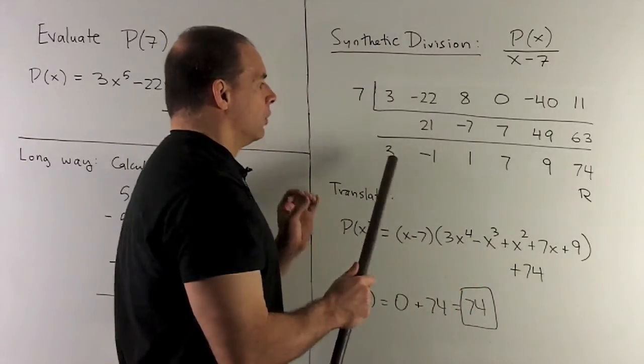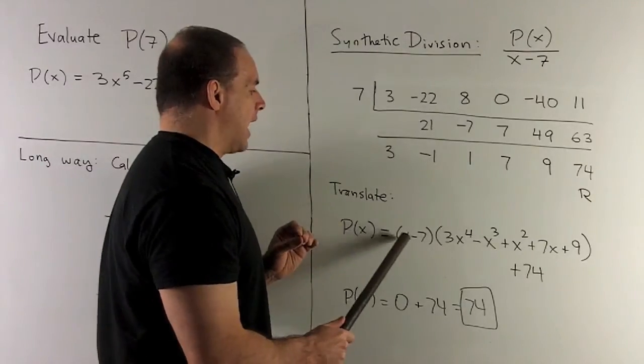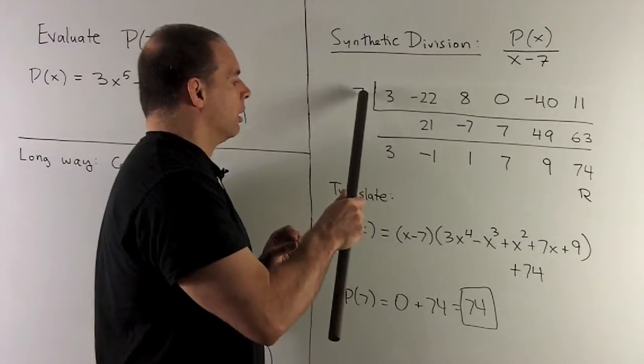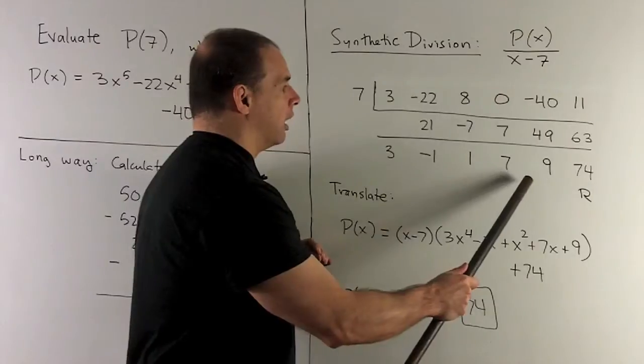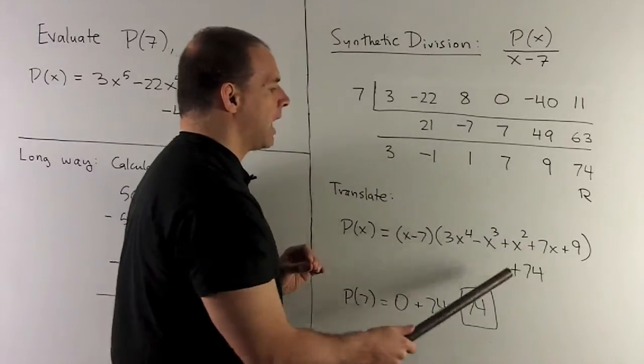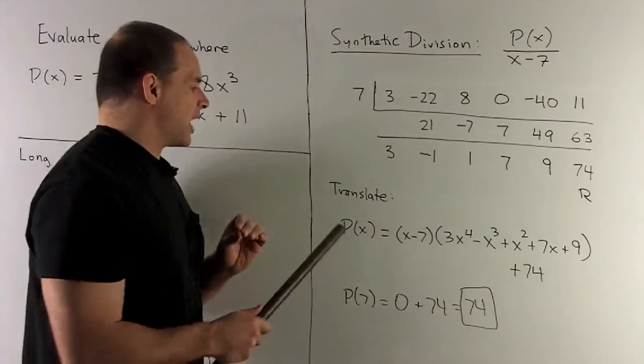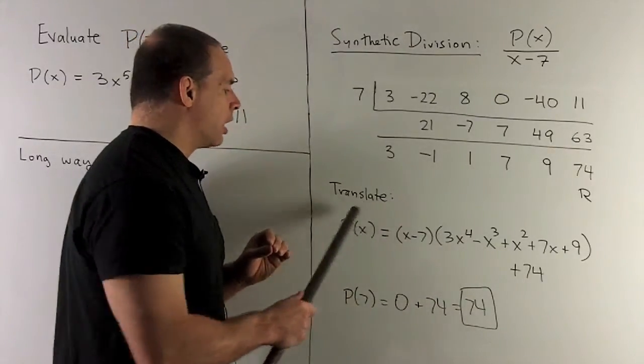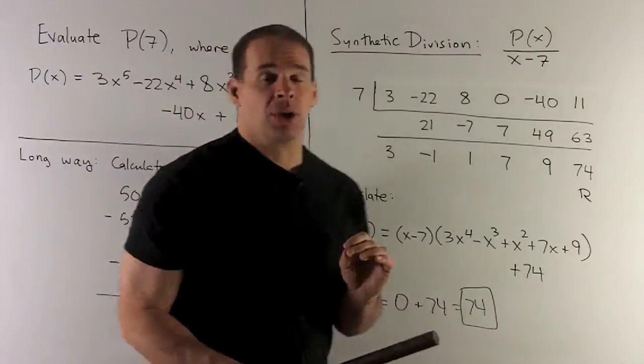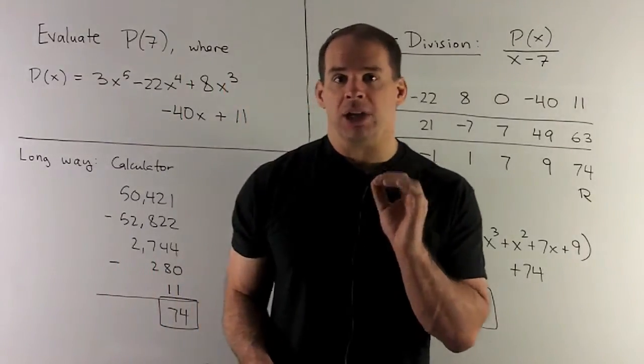Okay, the way we translate, P of X equals X minus your number times the polynomial here plus your remainder 74. So we put our 7 in here as we did before. We're going to get a 74 out, which matches with what we got through evaluation.